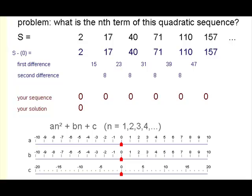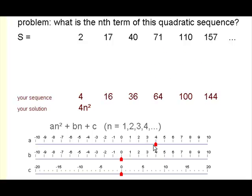It also tells you what the value of a is, the coefficient of n squared. Because a is always half the second difference number. So we know that a is 4 in this case.